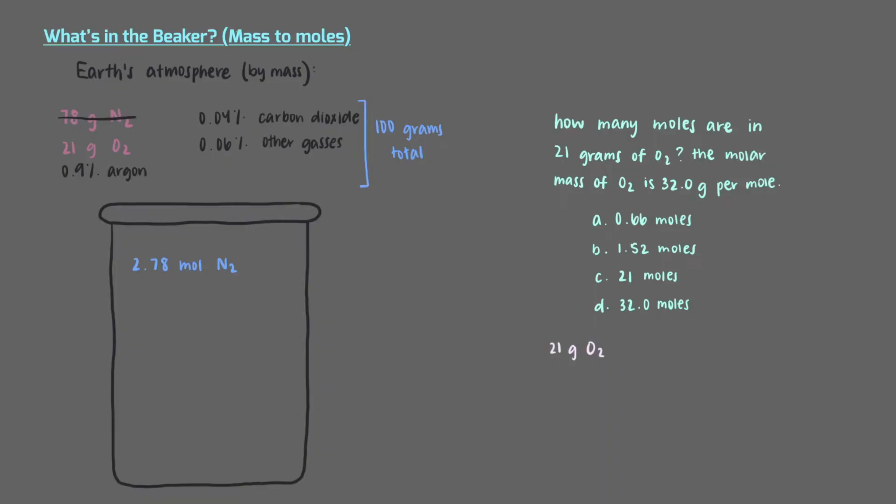We can convert 21 grams of oxygen to moles of oxygen by setting up this conversion factor that lets us cancel out the grams of oxygen and leaves us with moles of oxygen. Once again, we'll update our beaker to say how many moles of oxygen we have in this sample.